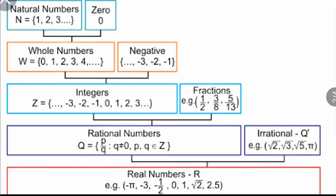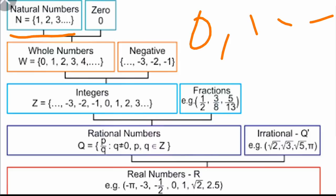We will learn natural numbers. This number is not natural. From the number system, it is a natural number. If you include 0, you call 0, 1, 2, 3, 4... these numbers are called whole numbers.